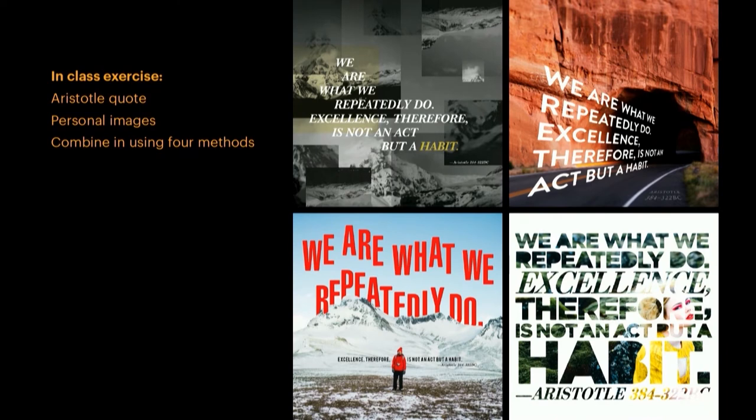After going through those four methods, I have the students bring in their own images. We do an in-class exercise where I give them a quote and they have an hour to combine type and image using the four different methods. Most of it is pretty rough, but it's a quick exercise for them to start to articulate why is one different than another. Almost everyone top left does separation, then fragmentation below, fusion upper right. And for type as image, they almost always just resort to a typeface and mask the image in, which is a basic way to do it — but that's how they're starting.